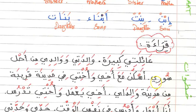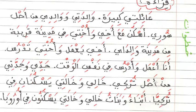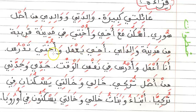Let's look at the reading part. I will try to read it in one set without interruption and then after that I will try to translate it. Let's begin. قراءة — عائلتي كبيرة، والدتي ووالدي من أصل سوري، أسكن مع أخي وأختي في مدينة قريبة من مدينة والداي، أخي يعمل وأختي تدرس، أنا أعمل وأدرس في نفس الوقت.